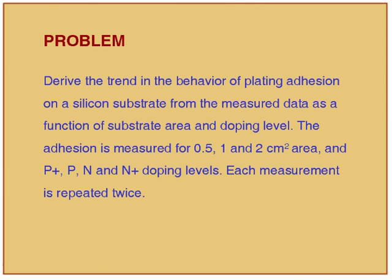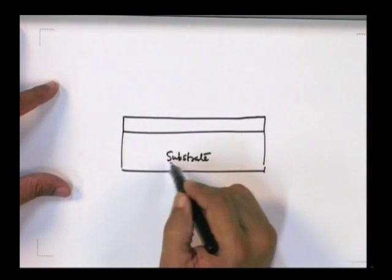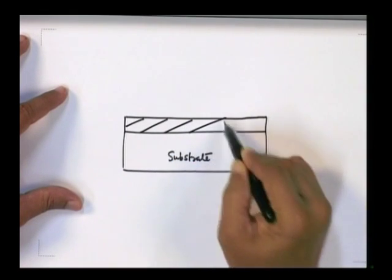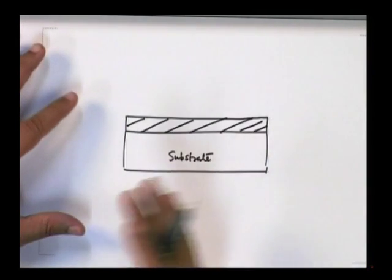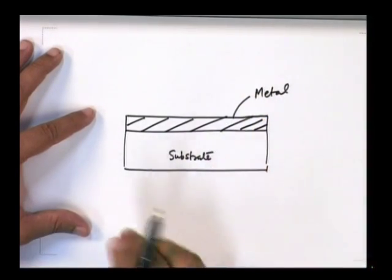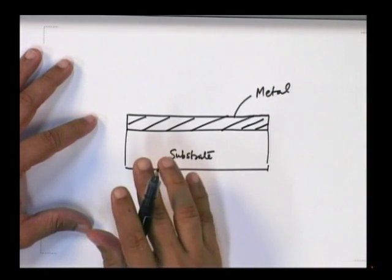Some technical terms are used but are not very important. The situation is that you have a substrate with a metal coating — plating. The adhesion between the metal and the substrate tells you how good your process is. If your adhesion is better compared to another process, your process is better. You are measuring adhesion for two variables: area of the substrate and the substrate condition.